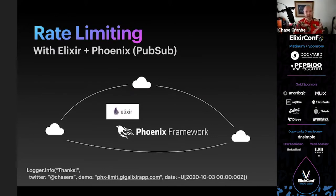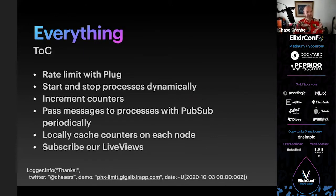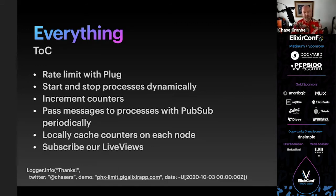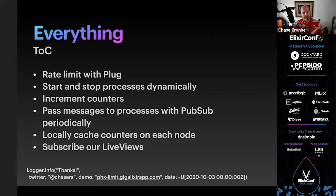We rate limit with Plug to catch all our endpoints. Here's how we're going to build it out: rate limit with Plug, dynamically start and stop processes — one process per session or API key — increment early encounters, pass messages to processes across the cluster with pub/sub, and when our processes get those messages we cache everything locally.